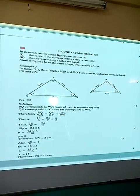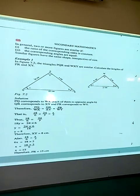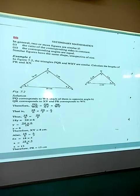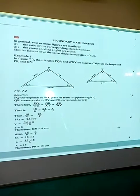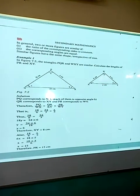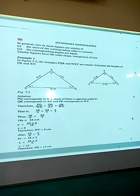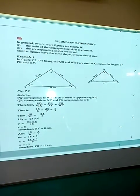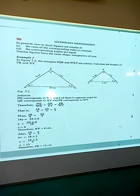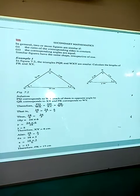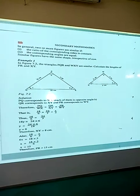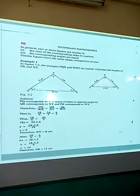Similar figures have the same shape irrespective of the size of the sides. So there are two major rules we must use to identify similar figures: the ratio of the corresponding sides is a constant, and the corresponding angles are equal. They must be in the same shape, irrespective of the sides. Let us look at an example.